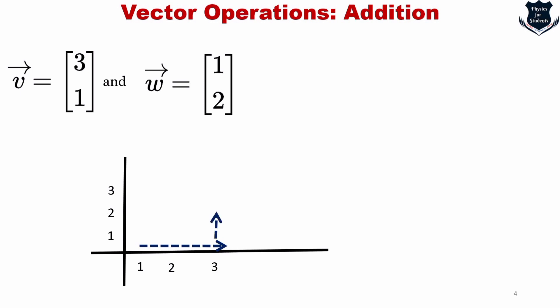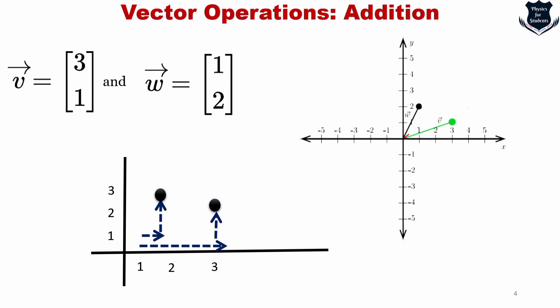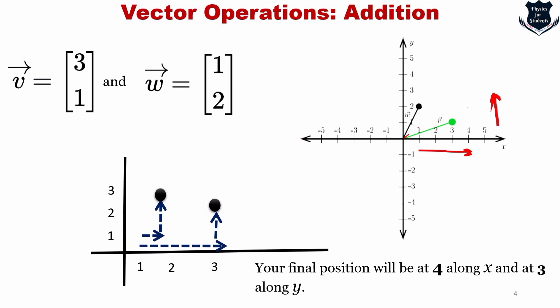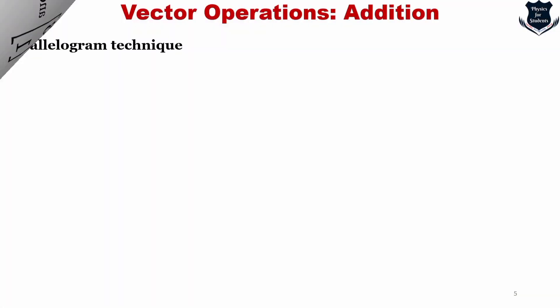For example, v can be thought of as moving three units along the x-axis and one unit along y, arriving at that point. Similarly for w, we add one vector and then move further. Starting at the origin, we move x by 3, then y by 1, then x by 1, then y by 2, and we find our final position at 4 along x and 3 along y.